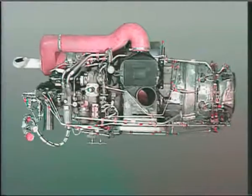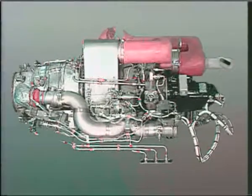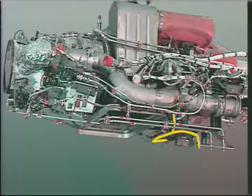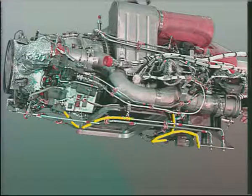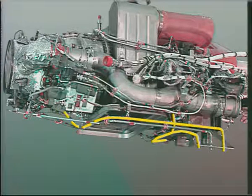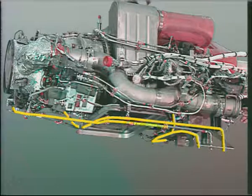Drain system. The APU drain system collects fluids from the fuel pump fuel control flange cavity, the inlet guide vane actuator, the combustion chamber drain valve, the fuel flow divider and drain valve assembly, and the turbine exhaust case.